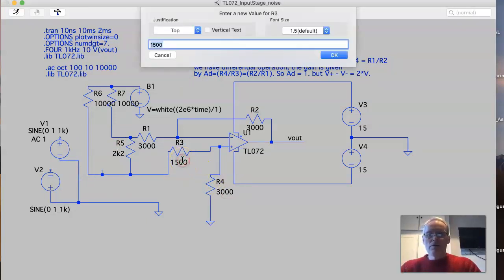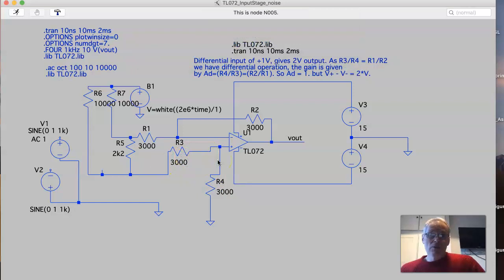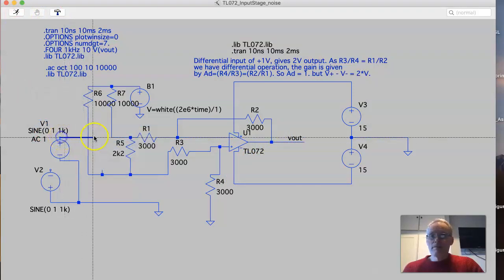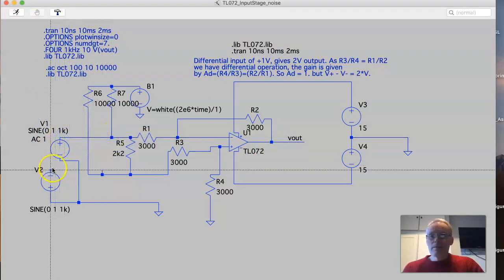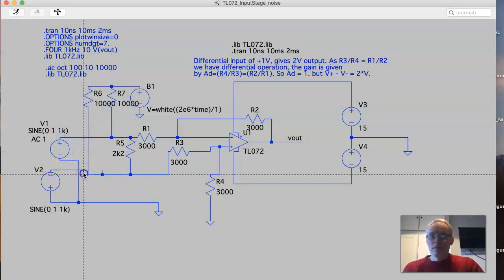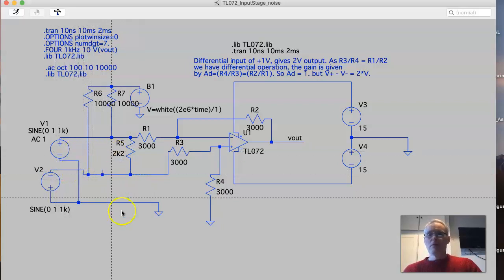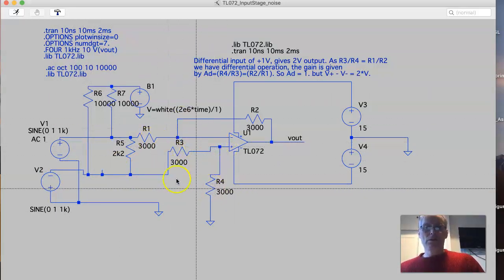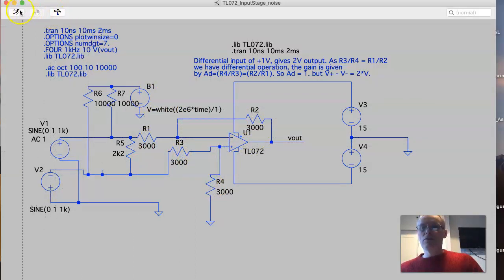That hopefully gives you an indication of how to go about analyzing and also the trade-off between matching the impedances completely or not. So if I connect everything, now we've got the noise and the signal running through. We've got 3k, 3k, 3k, 3k. If we run this now, have a look at the output...